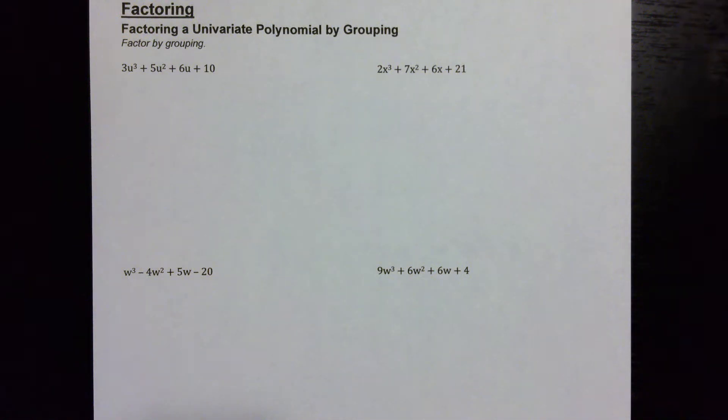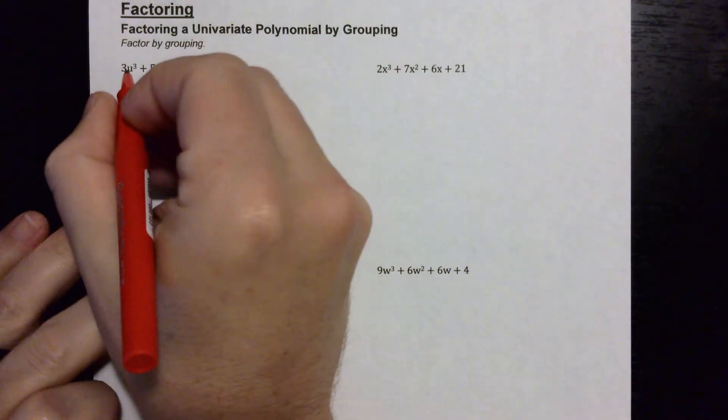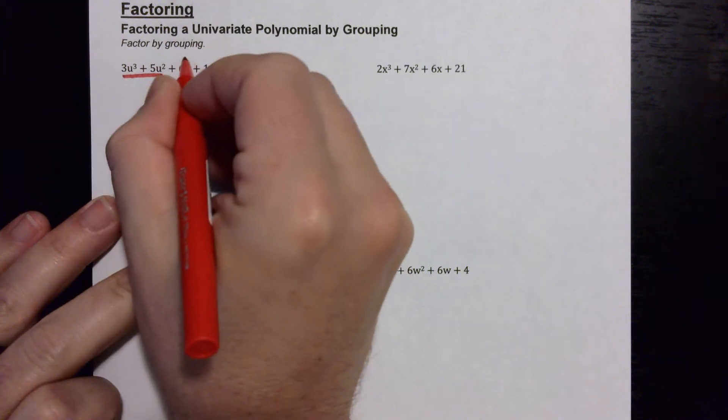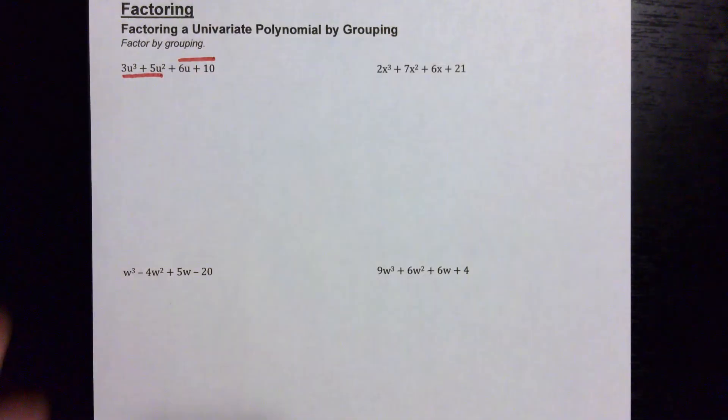In this video we're going to introduce factoring, and we're going to be factoring a univariate polynomial by grouping. A univariate means there's only one variable in the problem. So to do grouping, you group the first two terms together and then the second two terms together.